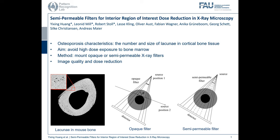However, the bone marrow is very sensitive to X-ray dose. Therefore, in order to protect it from overexposure, we want to apply opaque or semi-permeable X-ray filters. In this work, we investigate the image quality and the dose reduction when using an opaque filter or a semi-permeable filter.